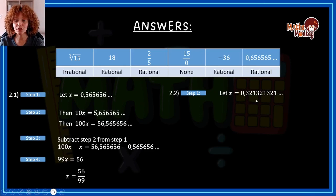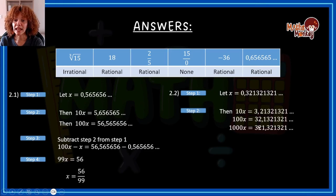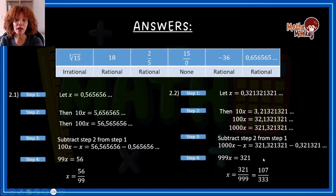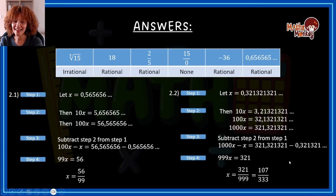The next one I gave specifically to show you'd need 1000x. We have 0.321321... Multiplying by 10 gives 2 1 3 after the comma; by 100 gives 1 3 2; but by 1000 gives 3 2 1 — matching x. So 1000x minus x gives 999x equals 321. Dividing both sides by 999: 321 over 999 simplifies to 107 over 333.